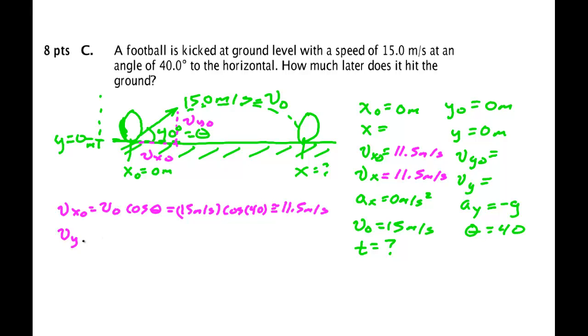For V Y not, it's V not sine of theta. So we're looking at the opposite side of the triangle. And that's 15 meters per second times the sine of 40 degrees. We punch that, we get 9.64 meters per second.